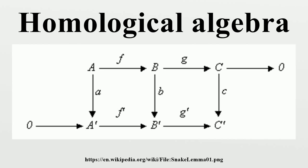For example, if X is a topological space, then the singular chains C_N are formal linear combinations of the N-simplices of X. If A equals F/R is a presentation of an abelian group A by generators and relations, where F is a free abelian group spanned by the generators and R is the subgroup of relations, then letting C_1 equals R, C_0 equals F, and C_N equals zero for all other N defines a sequence of abelian groups.